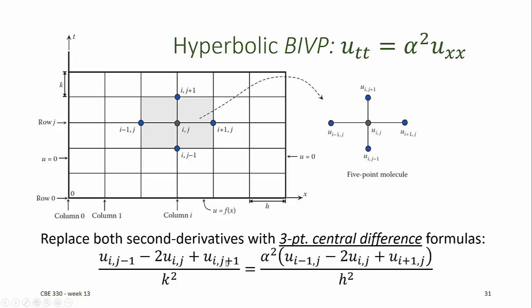This finite difference approximation represents the three-point central difference formula for the second partial derivative with respect to time in this direction, and this three-point central difference formula for the second partial derivative with respect to x in this direction.